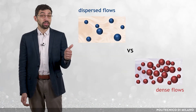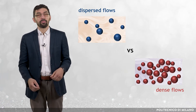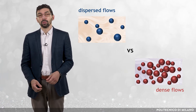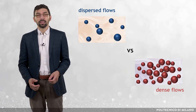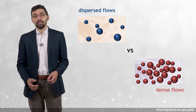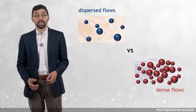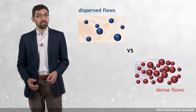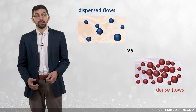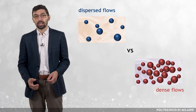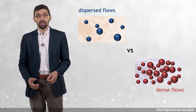In relation with this aspect, a primary distinction is between dispersed and dense flows. A particle-laden flow is called dispersed if the particles move as individual entities and their motion is dominated by the effect of the fluid, whereas it is called dense if the particle motion is dominated by the interactions between the particles, which therefore tend to move as a collective.